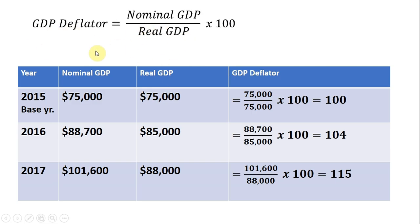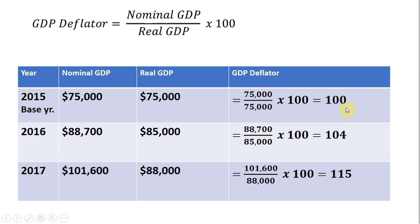Here again is the formula as a reminder, and here is some data for the economy from 2015 to 2016. 2015 has been designated as the base year. Nominal GDP and real GDP are equal in the base year, so if we calculate the GDP deflator for that year — nominal divided by real, multiplied by 100 — we just get 100. This is an index number and should not be interpreted as dollars, cents, or units of output.